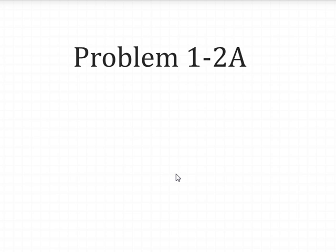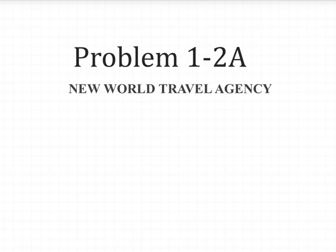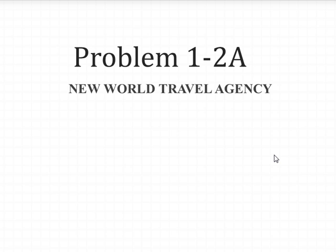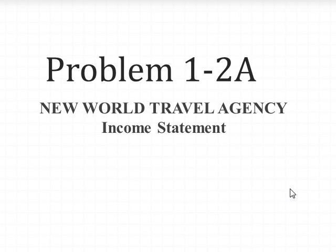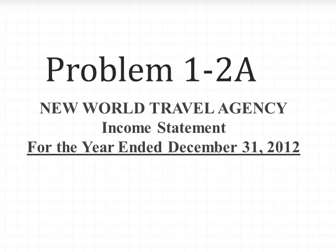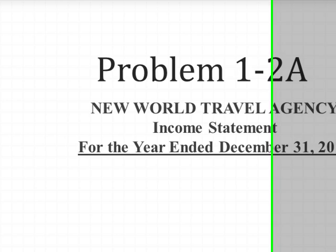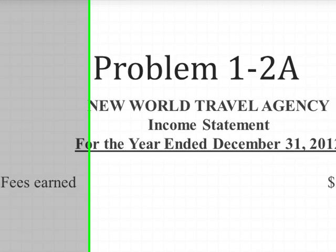To create an income statement, the first thing we need to start with is a title. We list the title of the company — New World Travel Agency — the title of the statement, which is an income statement, and then the period this statement covers, which is for the year ended December 31, 2012. Once we get the title in place, we then start with revenues. We list the revenues — in this case, fees earned for $200,000. Please understand that fees earned is the revenue account for this problem.